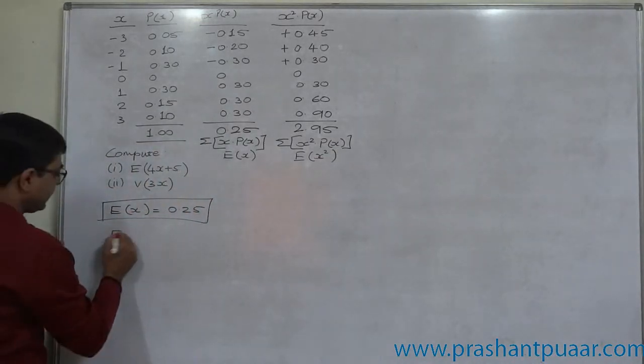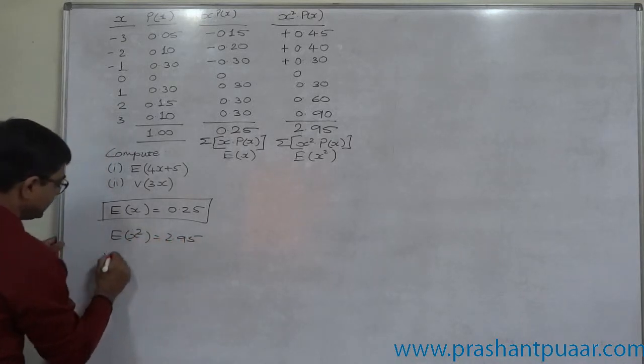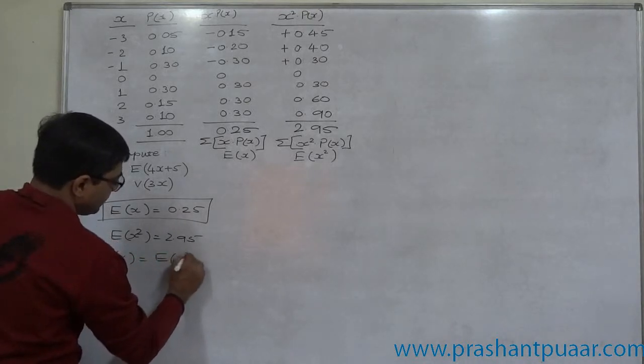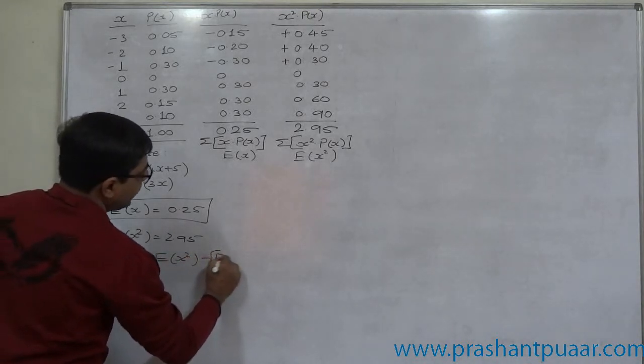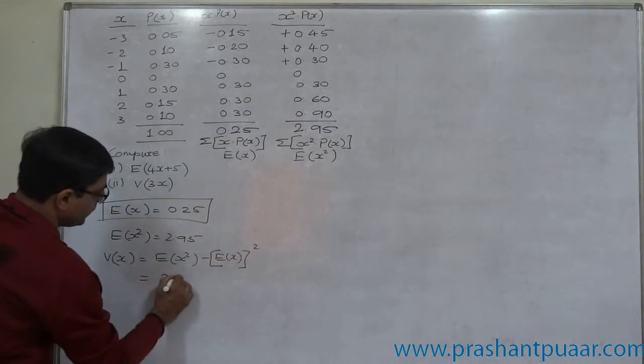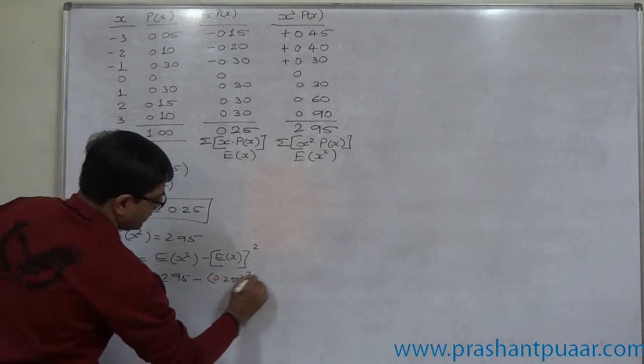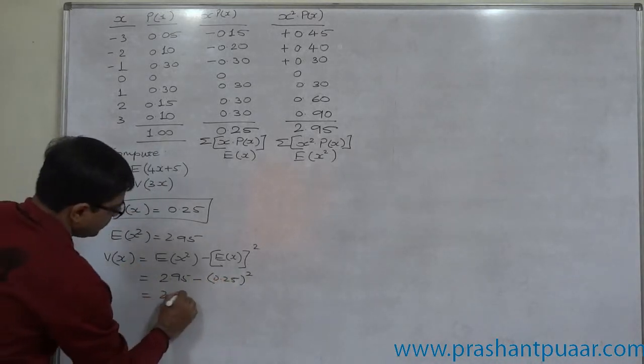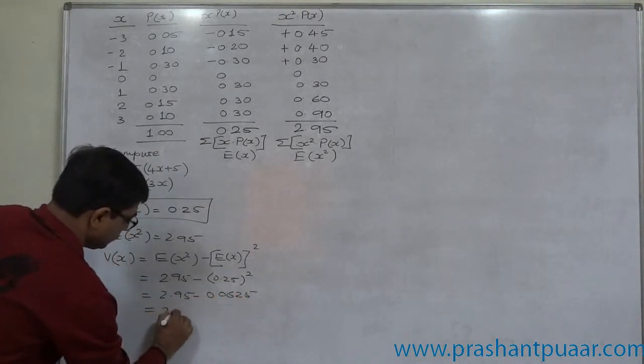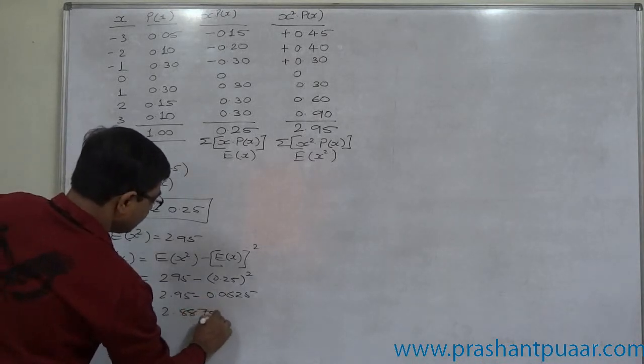E of x square is 2.95. That means V of x is now possible. E of x square minus E of x the whole square. 2.95 minus 0.25 square. So 2.95 minus 0.0625. That is 2.8875.